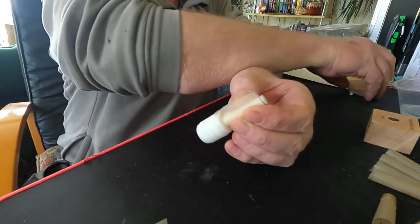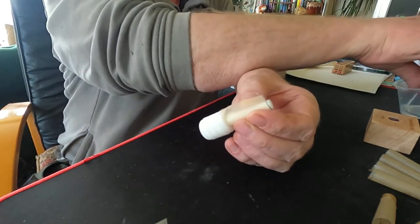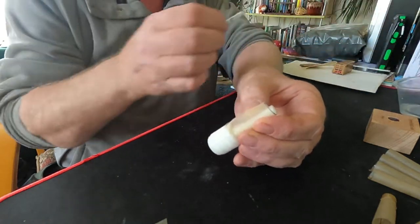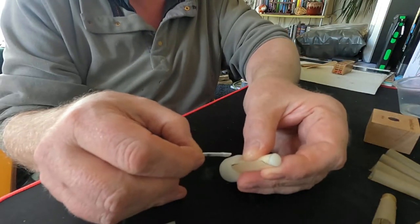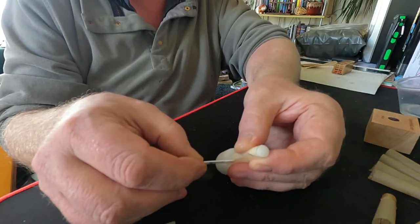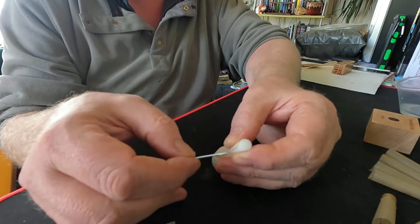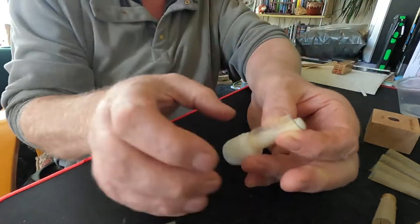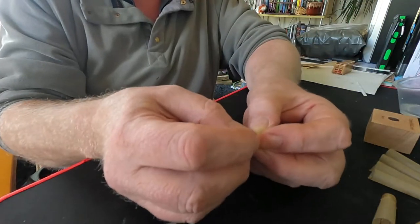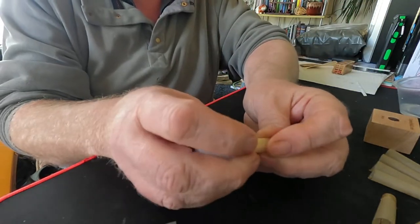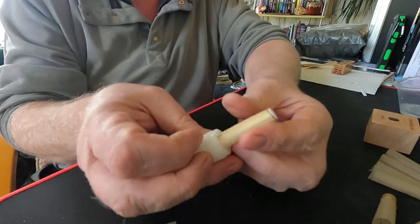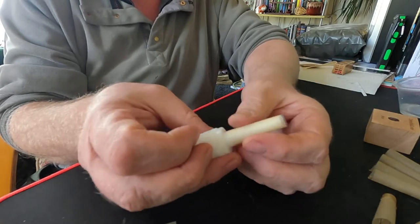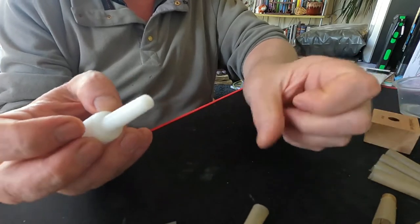A little bit of glue, not too much so it doesn't stick to the mandrel. Roll him up. There we have it, one tube.